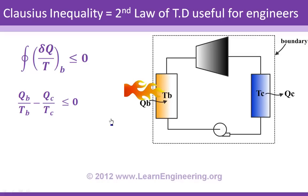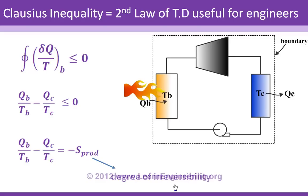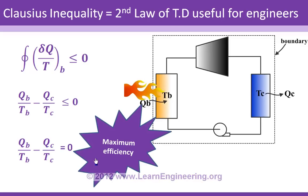Now introducing a new term S_production to convert the inequality to an equality. S_production represents the degree of irreversibility — the effect of friction, turbulence, or vortices that cause permanent energy loss. In an actual system, irreversibility is always present so S_production is always positive. If the system is perfect with no friction or turbulence, S_production equals zero, and the cycle achieves maximum possible thermal efficiency. This is another use of the second law.